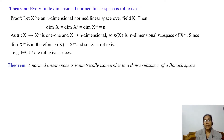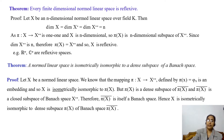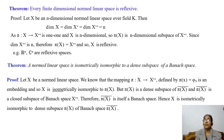The next theorem states that a normed linear space is isometrically isomorphic to a dense subspace of a Banach space. Let us prove this theorem. Let x be a normed linear space. We know that the natural embedding π from x to x** defined by π(x) = φₓ is an embedding, and so x is isometrically isomorphic to π(x).